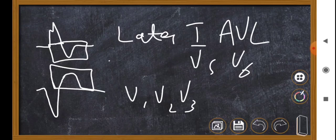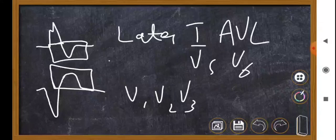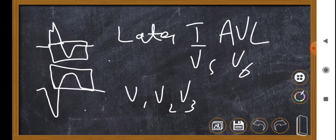These ST changes can mask the ischemic changes secondary to an acute MI. Therefore, there was a need to create a criteria that allows us to identify ongoing ischemia in the setting of LBBB, and so the Sgarbossa criteria was developed — first published in 1996.